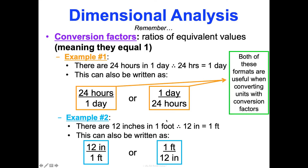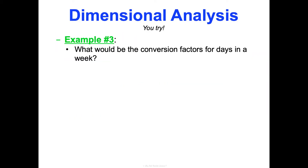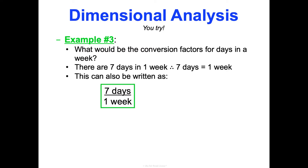We're going to use these. Try to make one yourself — what would be the conversion factors for days in a week? There are seven days in one week, so seven days equals one week. You could write that as seven days over one week, or one week over seven days.